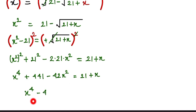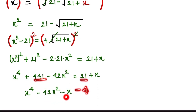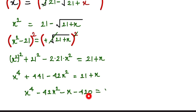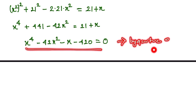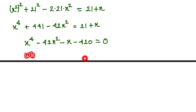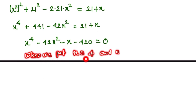Now we rearrange everything to one side: x to the power 4 minus 42x squared minus x minus 420 equals 0. This is a biquadratic equation. Now we find the zeros of this equation.